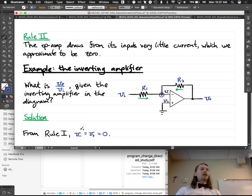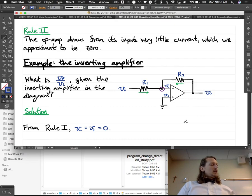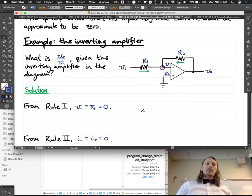So the inverting amplifier is our first example. And we want to know what the output voltage is given some input voltage. So this is a way to make an amplifier. It's a very simple amplifier circuit. So we want to know the ratio of the output voltage to the input voltage.